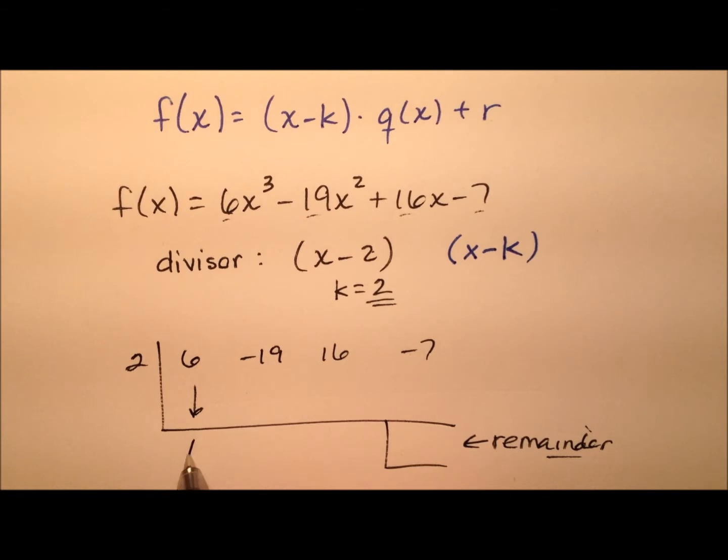So I'm going to bring down that leading coefficient of 6 and then go through this series of multiplications and additions. So 2 times 6 is 12. When I add here, I get negative 7 times 2 is negative 14. When I add here, I get 2. 2 times 2 is 4. So my remainder ends up being negative 3.